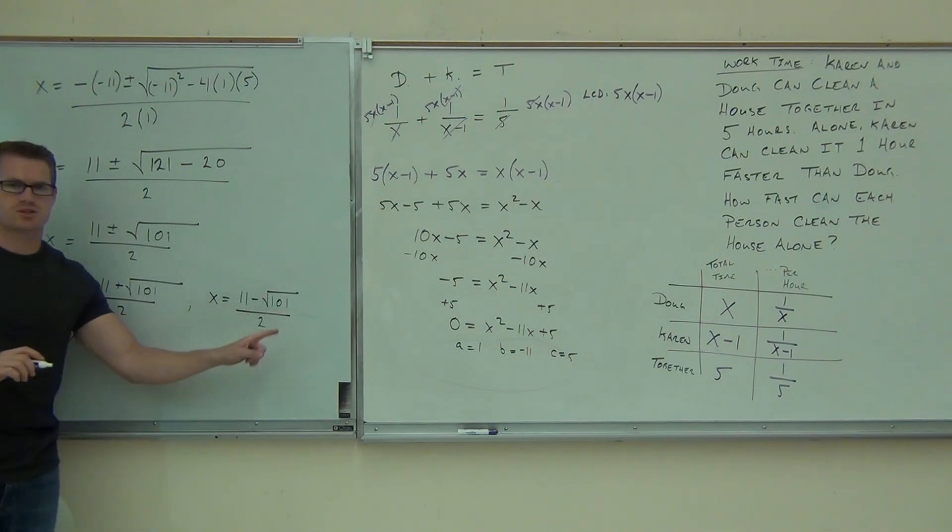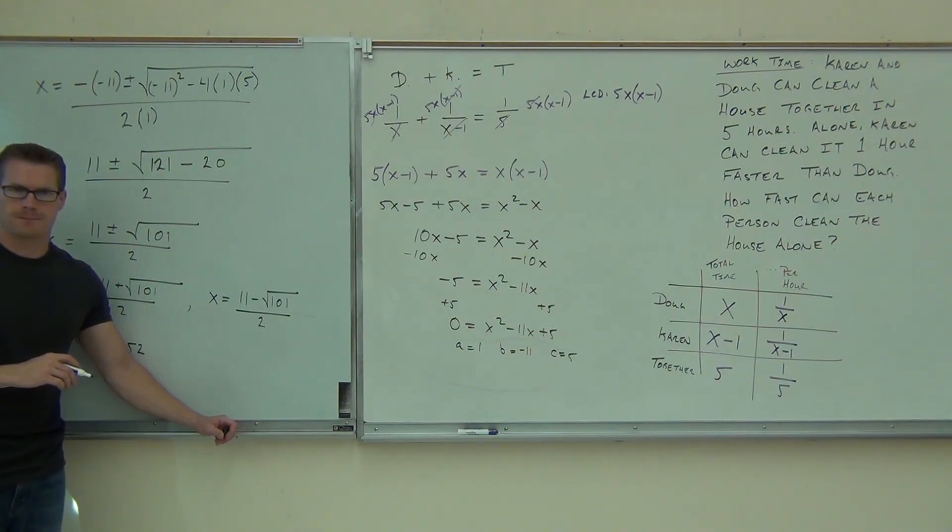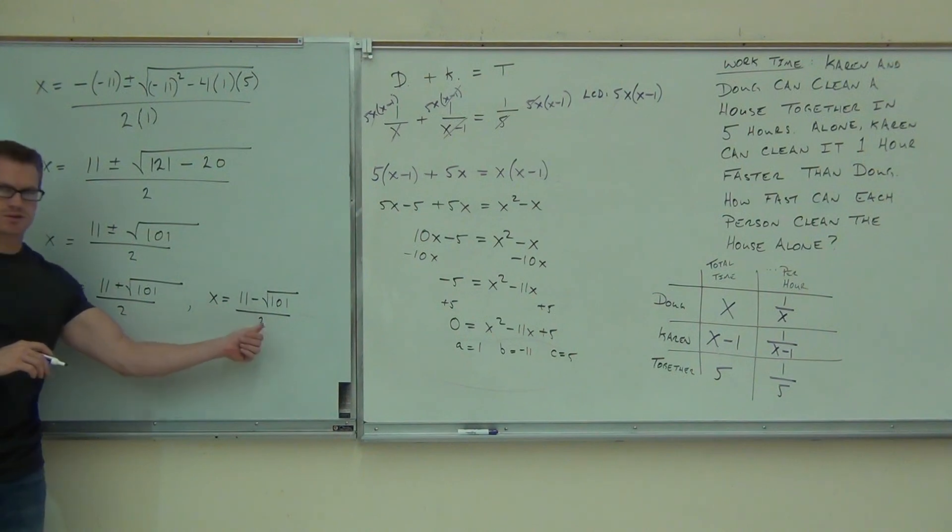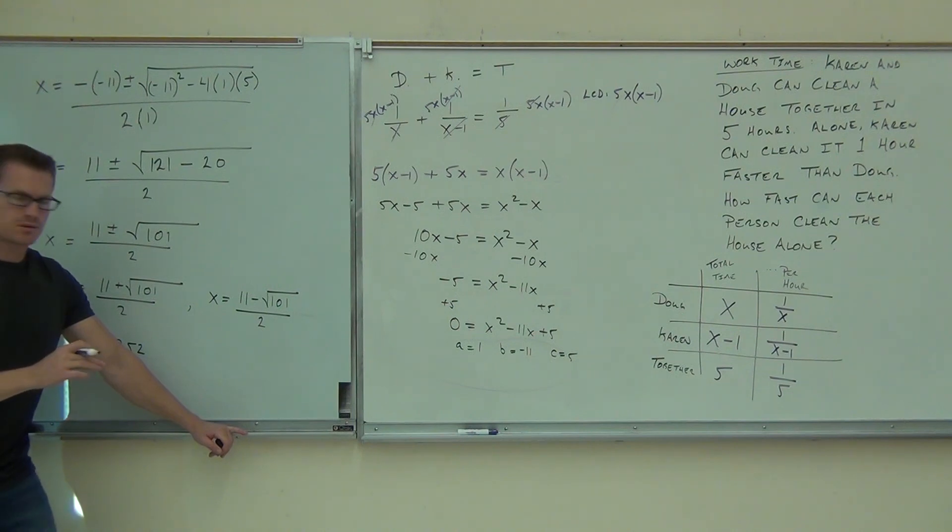Now do this one, 11 minus the square root of that, you should get point something. 10.52. For this one. Now do this one. 11 minus the square root of 101, that's going to be less than 1. You divide by 2. There you go.